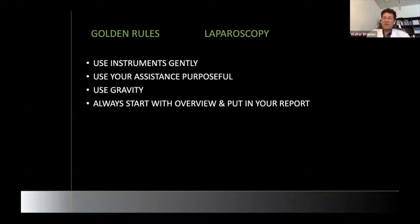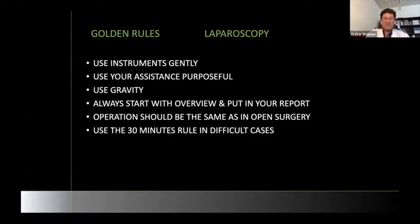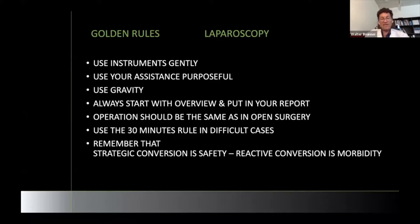Don't forget to sign in and put in the report what you found as a first finding when you looked into the abdominal cavity — that's very important, and also later for documentation. The length of incision in your abdominal wall should not harm the patient but should help them — the same as in open surgery. There's a 30-minute rule in difficult cases: tell your anesthesiologist, and if you see you're making no progress after 30 minutes, consider maybe another 30 minutes, but then really consider conversion before operating for 10 hours. Remember that strategic conversion is safety, but reactive conversion after harming the patient is morbidity. In colorectal surgery the conversion rate is around 15 to 20%, and it should not be zero, and it should not only be reactive.